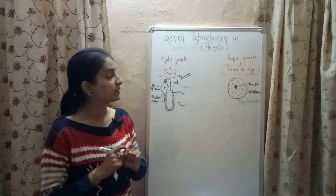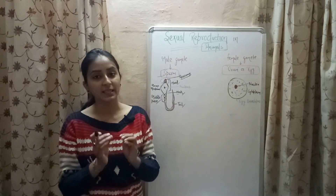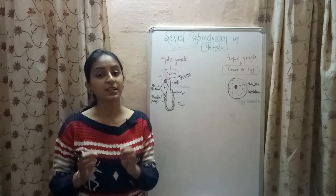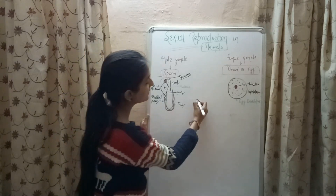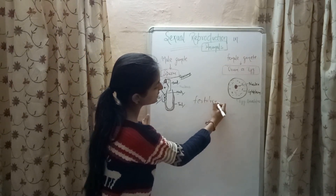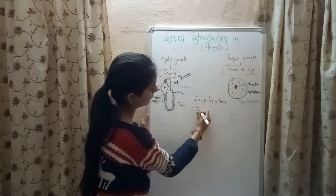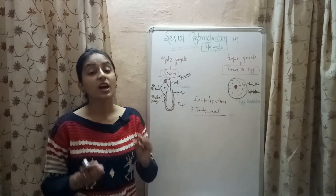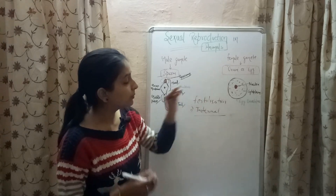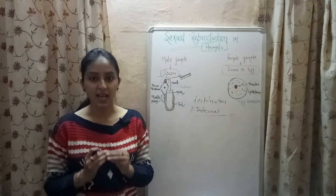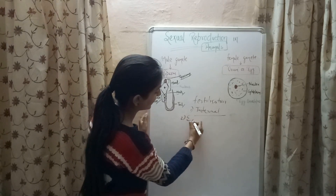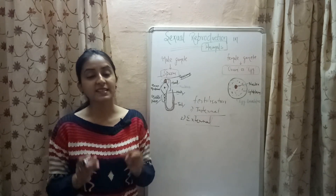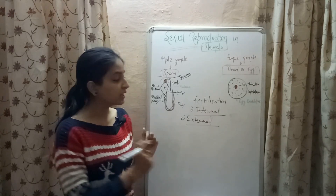For fertilization to occur, the sperm from the body of the male animal has to reach inside the female body so that the fusion can take place, finally leading to the formation of a zygote. Now there are two types of fertilization. The first is internal fertilization, in which the fusion of the sperm with the ovum takes place inside the body of the female. The second is external fertilization, in which the fusion of male and female gamete takes place outside the female body in a medium like water.